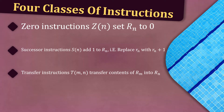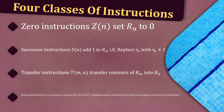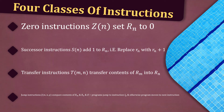Third, transfer instructions, t of m and n: transfer the contents of register rm into register rn. Fourthly, jump instructions, j of m, n and p: compare the contents of rm and rn, and if they are equal, then the program jumps to instruction ip.